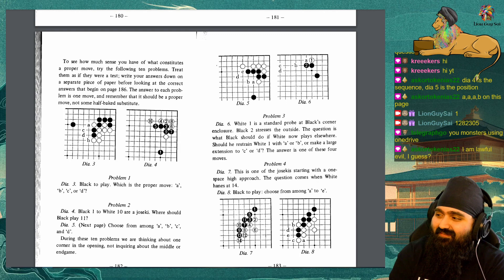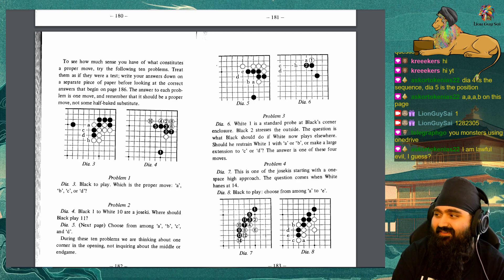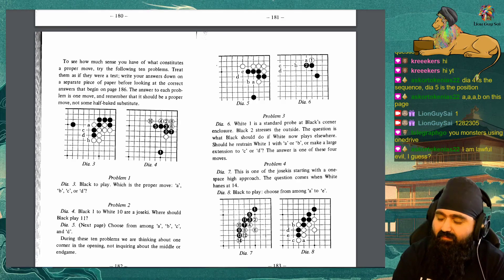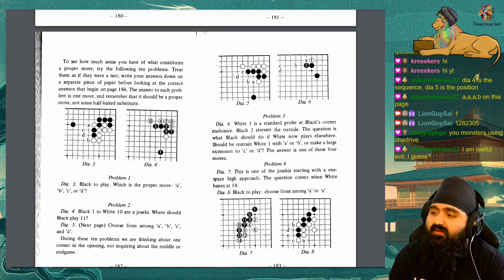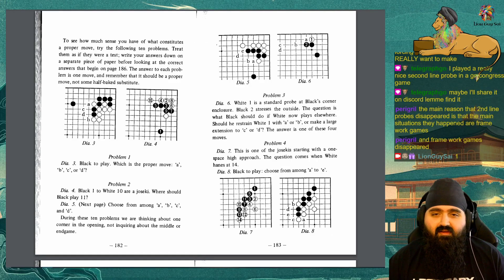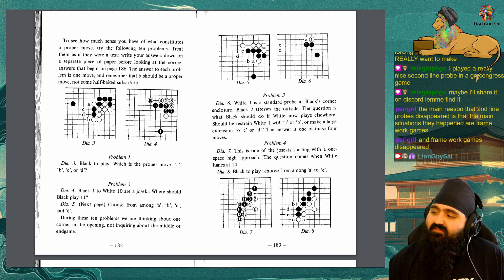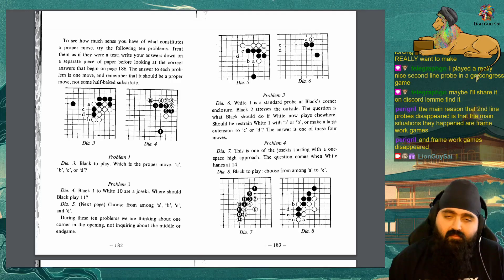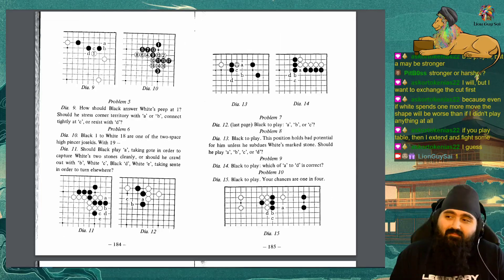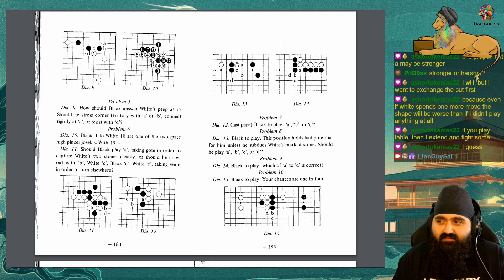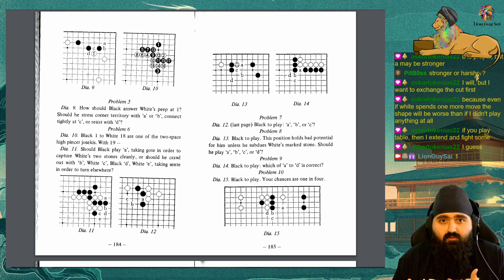Problem 3. Diagram 6. White 1 is a standard probe at Black's corner enclosure. Black 2 stresses the outside. The question is what should Black do if White now plays elsewhere? Should he retain White 1 with A or B, or make a large extension to C or D? The answer is one of these four moves. Problem 4. Diagram 7. This is one of the joseki's starting with a 1 space high approach. The question comes when White hanes at 14. Diagram 8. Black to play. Choose from among A to E. Problem 5. Diagram 9. How should Black answer White's peep at 1? Should he stress the corner territory with A or B, connect tightly at C, or resist with D?